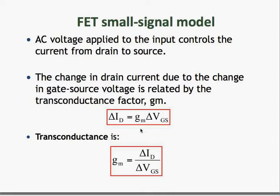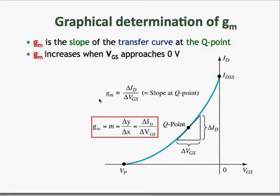The formula for GM is the change in drain current divided by the change of the gate voltage. There are two ways to determine the transconductance factor GM: the first is by using the graphical method and the second is using the mathematical method.